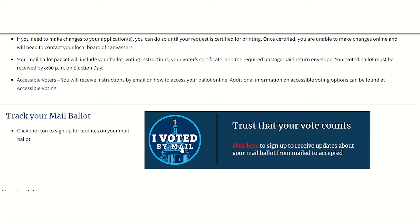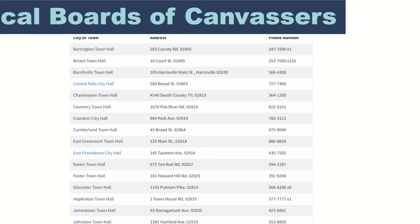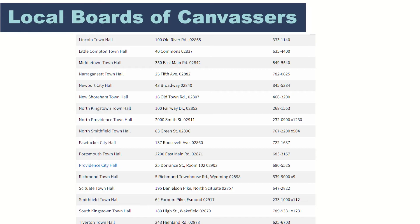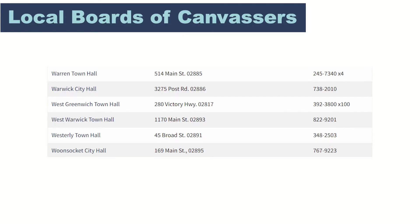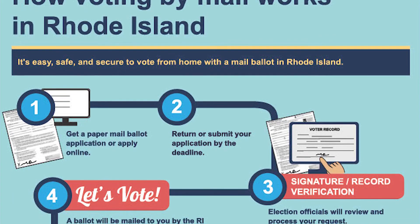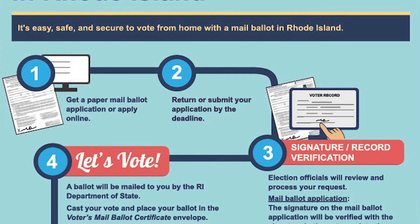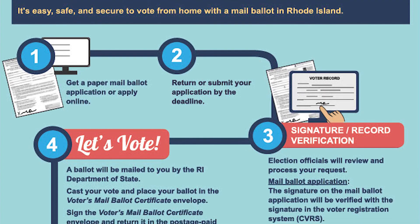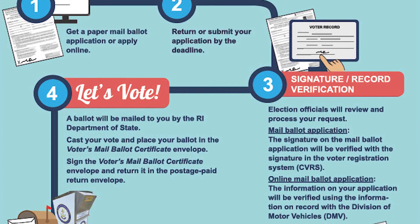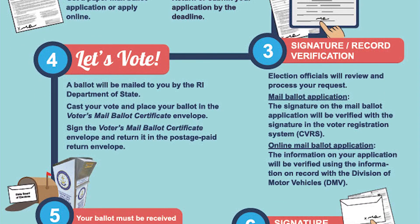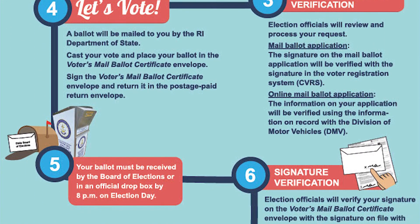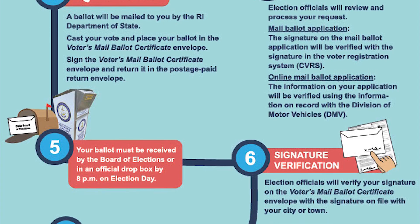Once your mail ballot application is submitted, it will be sent to your local board of canvassers. They will contact you if there are any issues with your application. You can trust that your vote counts and is secure. The signature on your mail ballot will be compared to the signature on your voter record as part of a rigorous signature verification process.